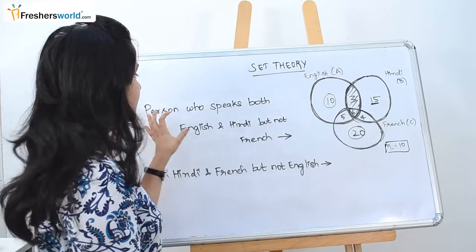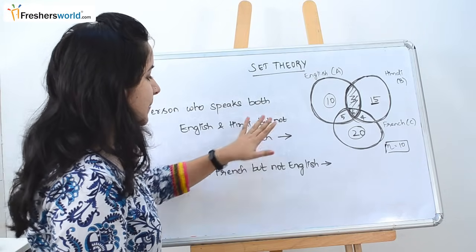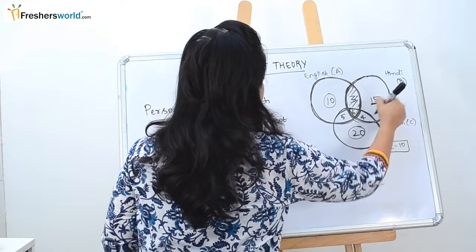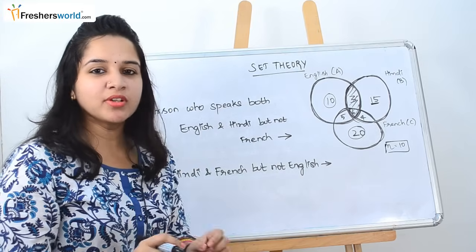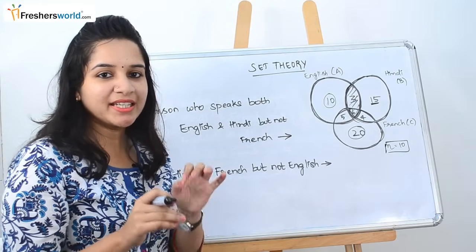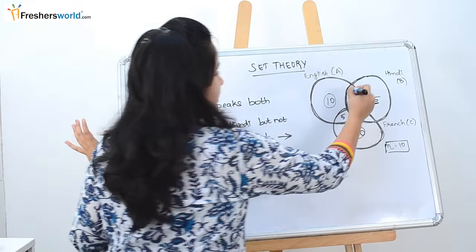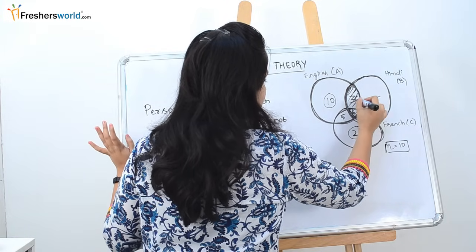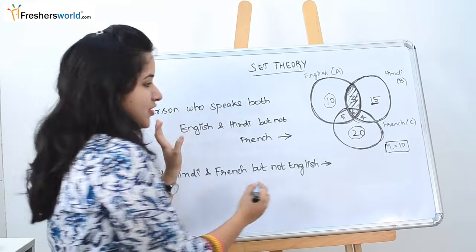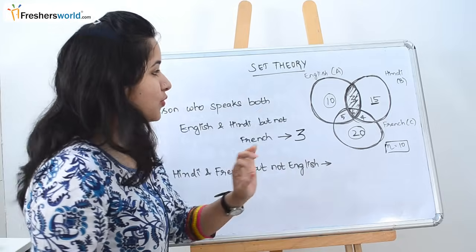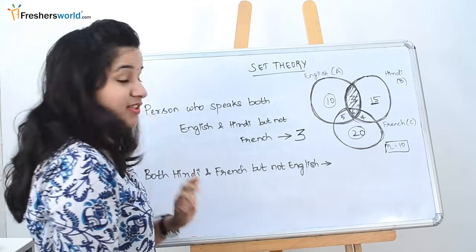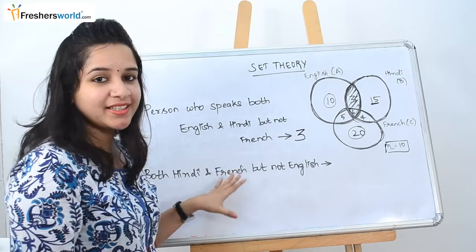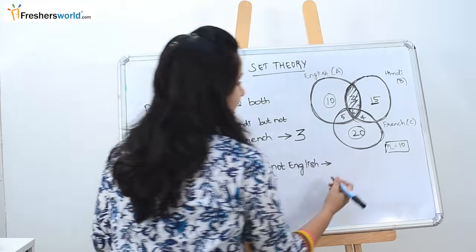The next question is: persons who speak both English and Hindi but not French. The people who know English and Hindi but don't speak French — this is very similar to the 'only English and Hindi' question we dealt with earlier. The intersection representing only English and Hindi gives the answer 3. Similarly, the next question asks for persons who know Hindi and French but not English. This is similar to the only Hindi and French question, so the answer is directly 4.